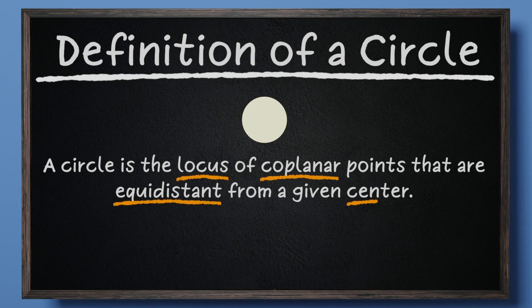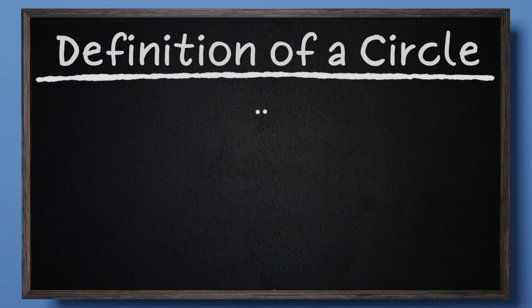There are four vocabulary words in this definition that are crucial in understanding geometric circles. We will save locus for the end and begin by reviewing coplanar first. We learned early on in geometry that coplanar points are all on the same plane.